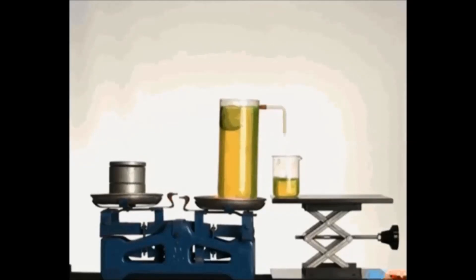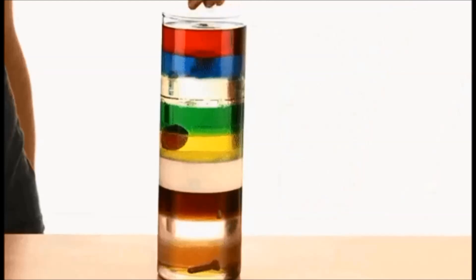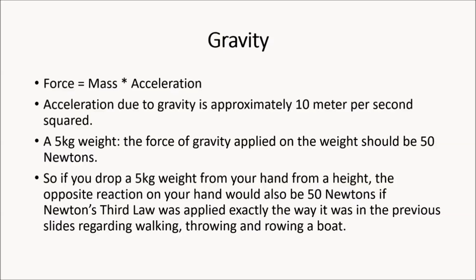Some examples are as follows: buoyancy and the density gradient force. Force equals mass times acceleration. Acceleration due to relative density is approximately 10 meters per second squared. Applied on a 5 kilogram weight, that should be 50 Newtons. So if you drop a 5 kilogram weight from your hand from a height, the opposite reaction on your hand would also be 50 Newtons.